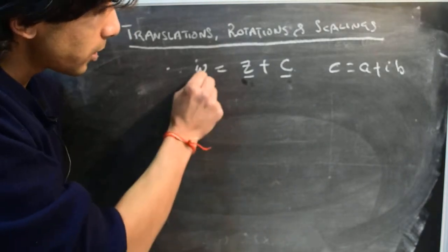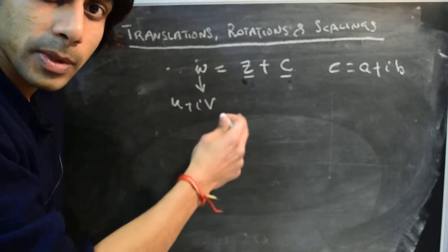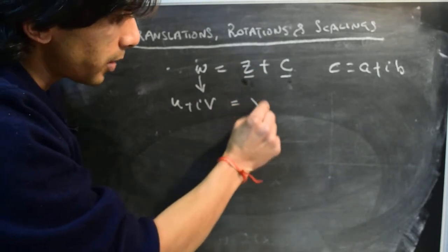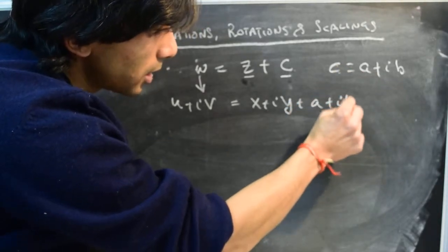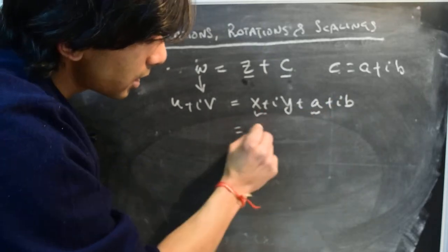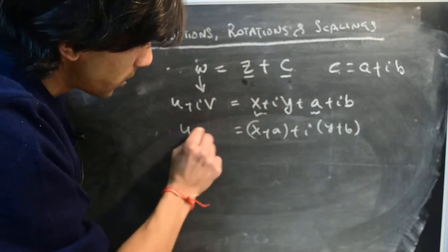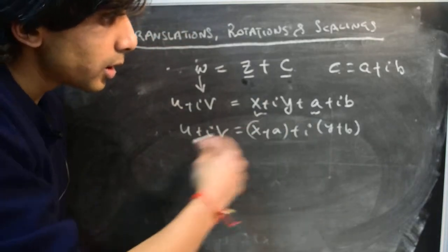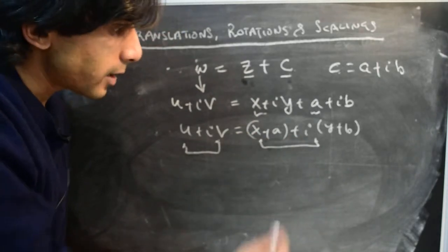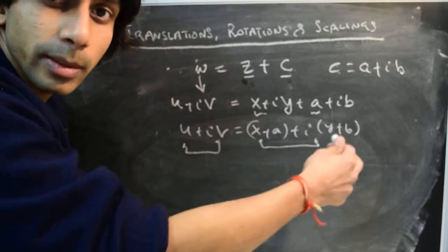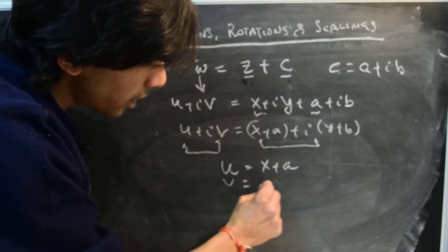When we think of this as a function, we write w as u + iv (the typical variables for the w-plane) and z as x + iy. Adding the constant a + ib gives us (x + a) + i(y + b) = u + iv. Equating real and imaginary parts: u = x + a and v = y + b.